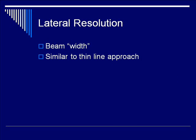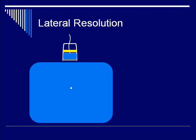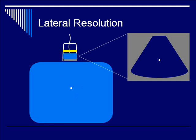How about lateral resolution? Recall that lateral resolution depends on how wide the beam is. The way we measure this is very similar to the thin line approach for measuring axial resolution. Here you have a point-like reflector or a thin line reflector that's oriented vertically, and in the field you'll measure the thickness from left to right, or in the leading edge to receding edge axis, of the point.